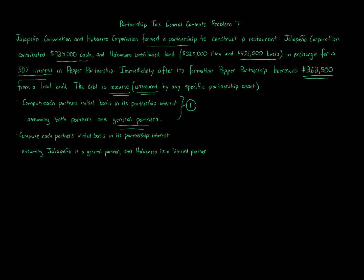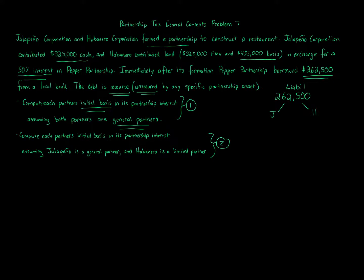We have $262,500 of liabilities in this problem. The question asks for the partners' initial bases on formation — this all happens at the same time. The key distinction between situation one and situation two is how we divide up that $262,500 recourse liability between Jalapeno (J) and Habanero (H). Which person is responsible for what portion?